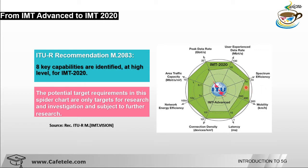Number 3 is spectrum efficiency. In IMT Advanced it was 1x, but in IMT-2020 it leads to 3x — meaning whatever 20 MHz bandwidth you have will be utilized up to 3 times more efficiently. Then we have mobility: in IMT Advanced it was 350 km/h, but in 5G it leads to 500 km/h. Mobility is defined as mobile speed, and the 500 km/h target is envisioned for high-speed trains — only a moderate increase from IMT Advanced.